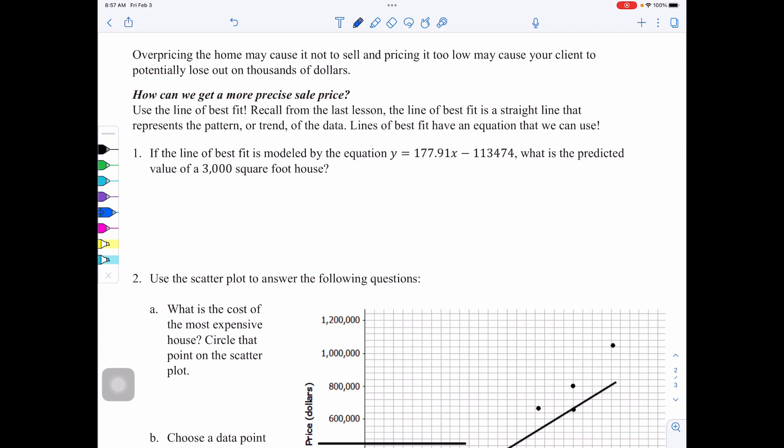If you recall from the last lesson, the line of best fit is the straight line that represents the pattern or trend of the data. Lines of best fit have an equation that we can use. Think back to the previous chapters we've had. We know there's an equation of a linear function or a straight line, which is always the form y equals mx plus b. We can actually write an equation for our line of best fit in that same form, y equals mx plus b.